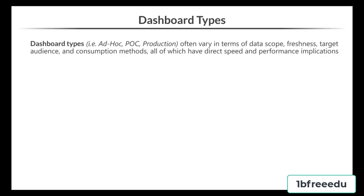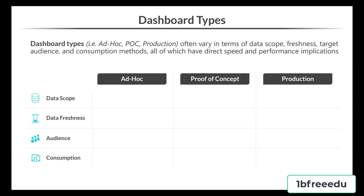The types of dashboards we develop vary in terms of data scope, data freshness, audience, and consumption method. Each of these points will impact dashboard performance and the methods we'll use to optimize those dashboards. Dashboard types are broken down into a few different areas. The generic types can be broken into ad hoc, proof of concept, and production dashboards.